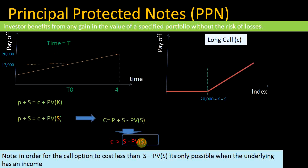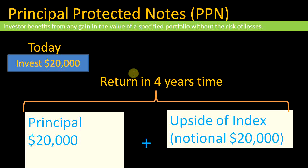Going back to the principal protected note: if you are guaranteeing the full principal as part of your structure — a full principal protected note — that is only possible if your underlying provides an income. You need a long position in a call option linked to the index, and if that index is providing an income, then it's possible to set up a structure where 100% of the principal is protected.